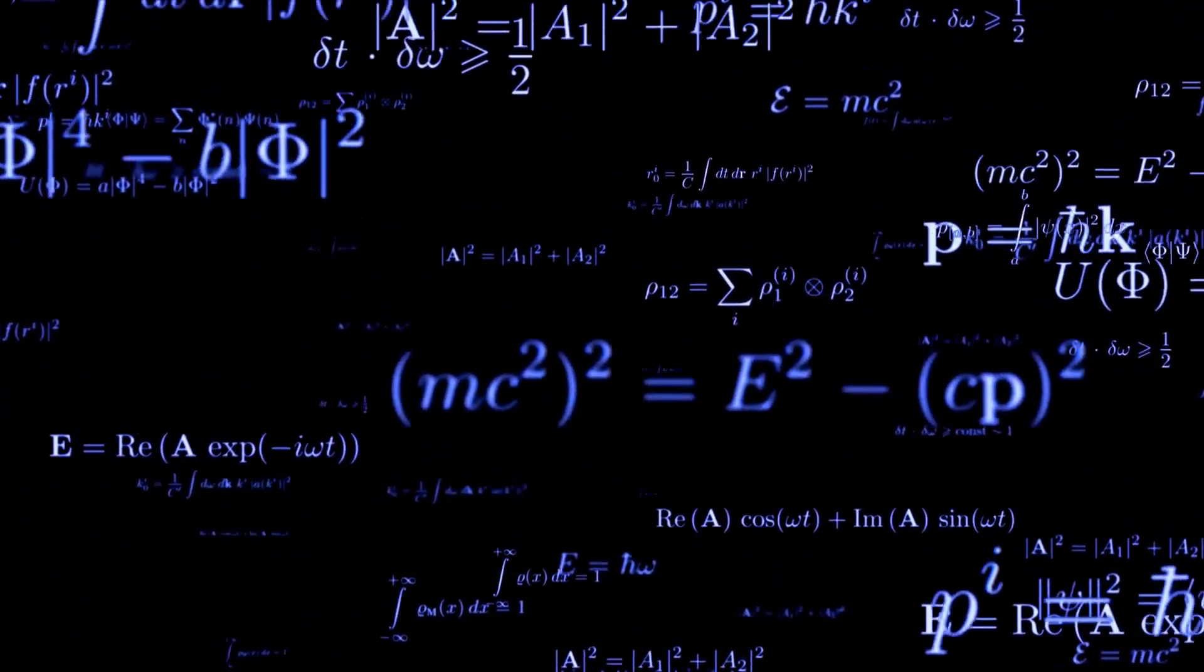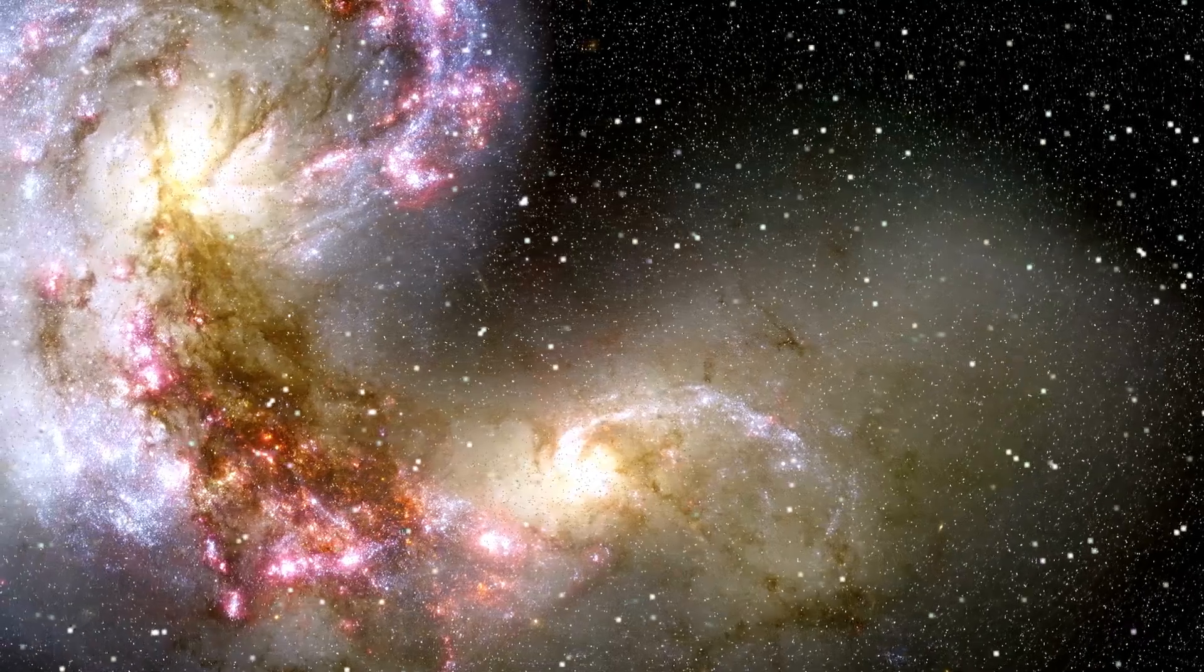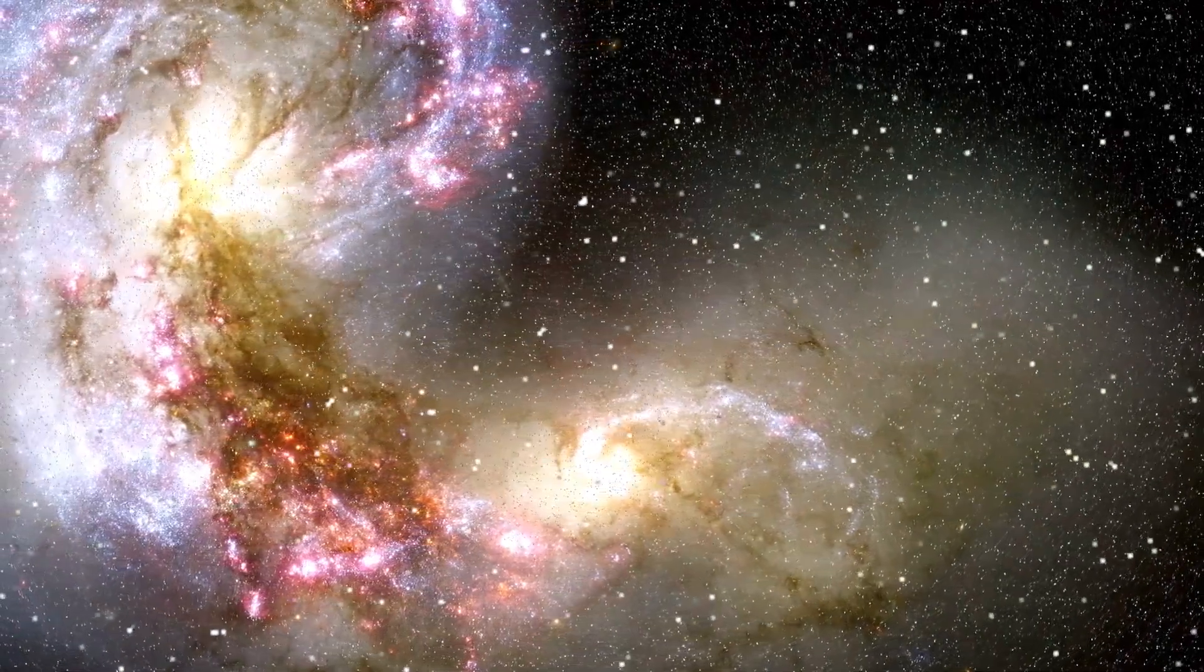And guess who gets another confirmation of his theory? Albert Einstein and his revolutionary theory of general relativity, which predicted that light could be bent by gravity. This observation fulfills Einstein's prophecy, reaffirming the brilliance of his ideas.